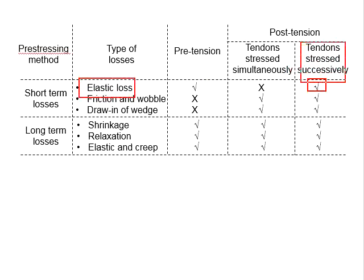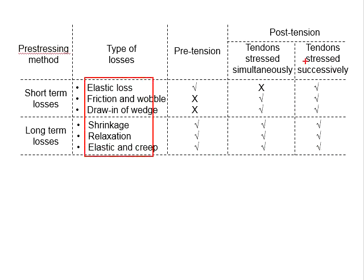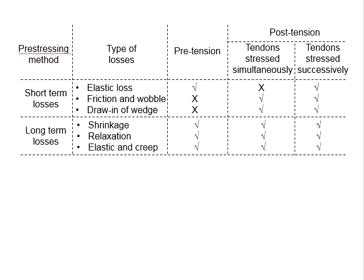Therefore, there will be elastic shortening losses when tendons are stressed successively. Because all losses apply to this condition, post-tensioning with successive stressing has by far the highest degree of losses.